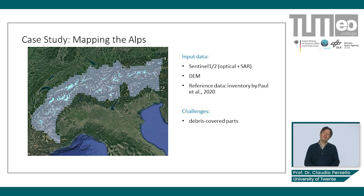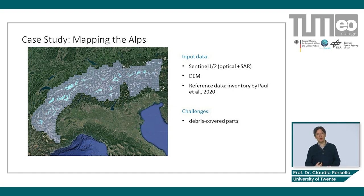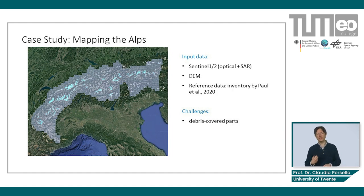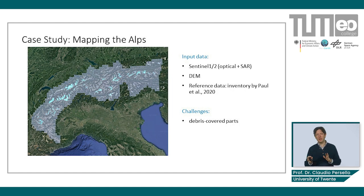We started our research considering the Alps for our initial case study area. We built a dataset including Sentinel-1 and Sentinel-2 images, integrating optical and SAR images as well as digital elevation models. The main challenge is given by debris-covered glaciers, while mapping clean ice is relatively simple.